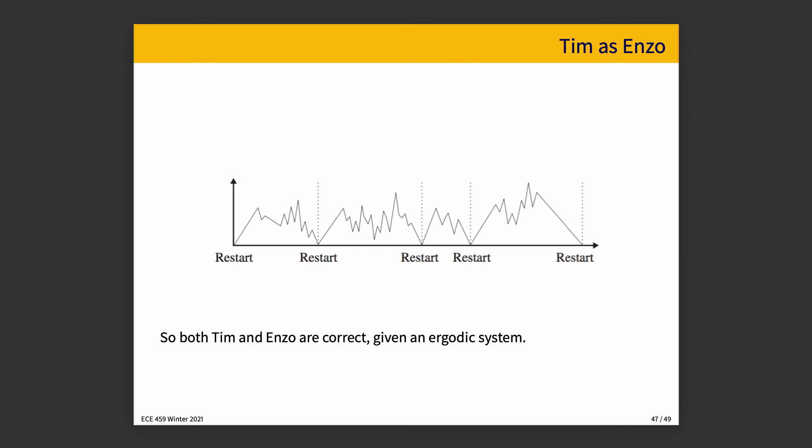If all of those conditions hold — irreducibility, positive recurrence, and aperiodicity — then both Tim and Enzo are correct. You can take one long run and split it up every time there's a restart, or you can take several runs and stitch them together. It doesn't matter; they all end up with the same result. The average that you calculate will be valid either way. It's helpful when everybody wins.